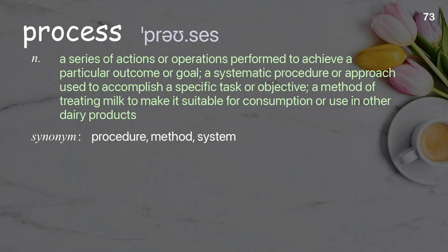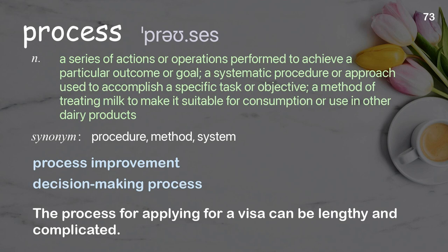Process: a series of actions or operations performed to achieve a particular outcome or goal; a systematic procedure or approach used to accomplish a specific task or objective. Examples: the process for applying for a visa can be lengthy and complicated.